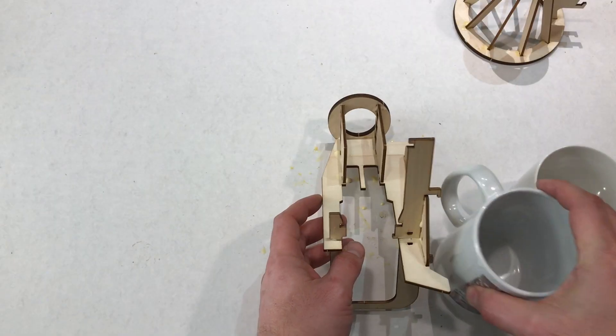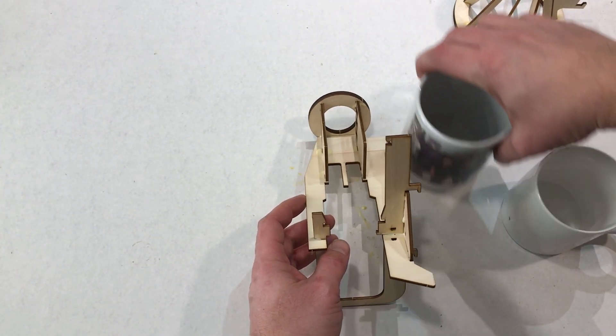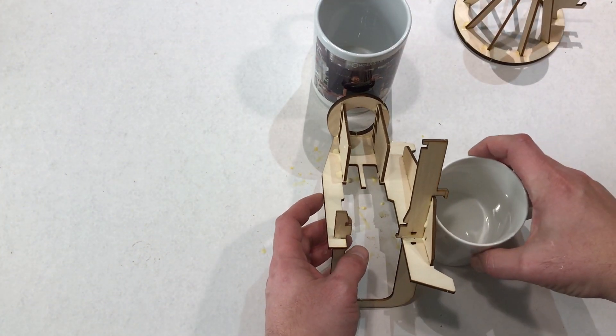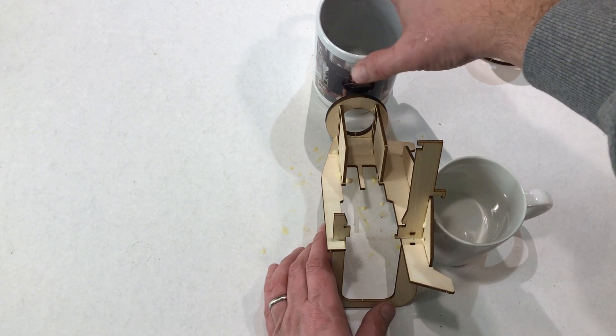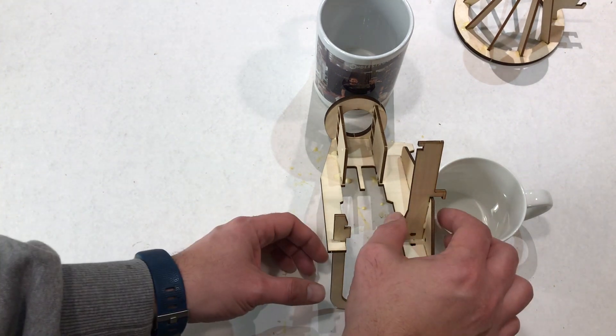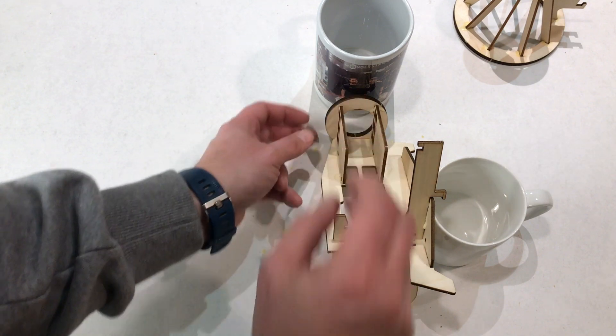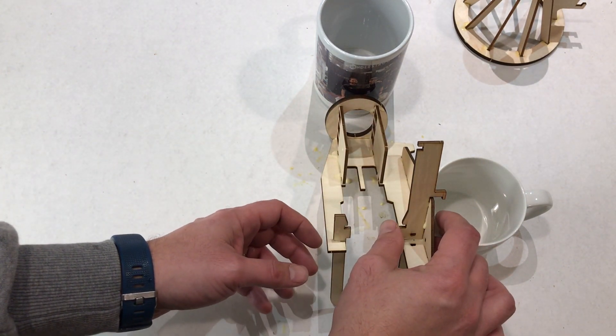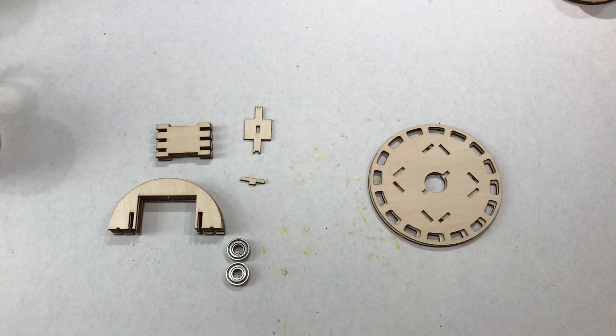Just whatever you have laying around, something to prop up these pieces while they glue. We want to make sure we check that everything is square again and supported as the glue is drying.